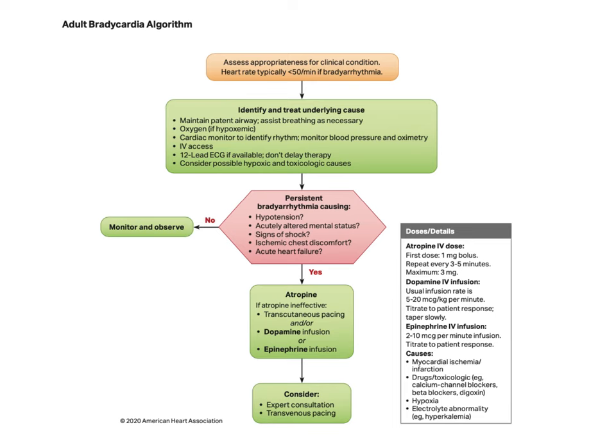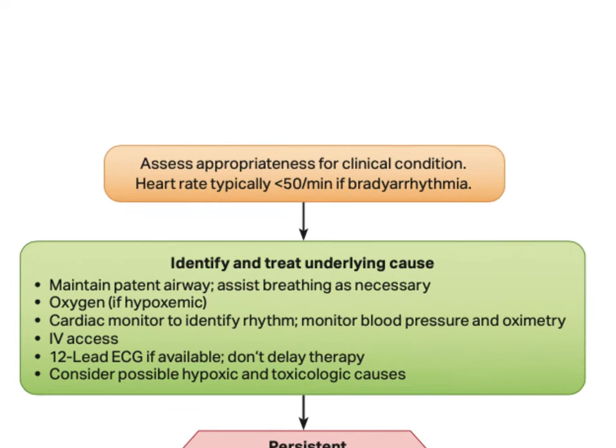The first step is to make absolutely sure that you should be using this algorithm at all. There are a variety of conditions that will make patients bradycardic — for example, an acute MI with the body attempting to reduce myocardial workload, or bradycardia as a response to increasing intracranial pressure or hypertension in the setting of trauma or stroke. This algorithm is designed to manage patients where the slow heart rate is the problem. The best clue is your patient's blood pressure — if they're maintaining a relatively normal BP, the rate is probably not the problem.